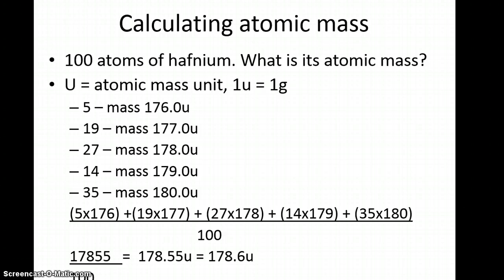To find the atomic mass or average of all these isotopes, take the number of atoms, multiply by its mass, add all those together, and divide by the total, which is 100.